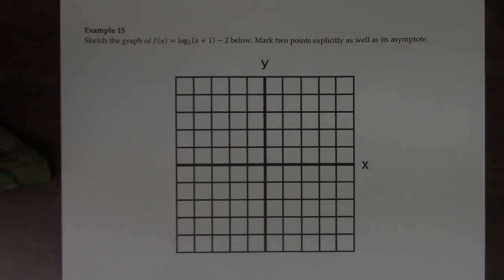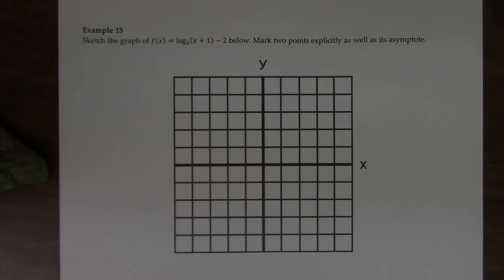Number 15 says sketch the graph of log base 2 of x plus 1 minus 2 below. Mark two points explicitly as well as its asymptote.